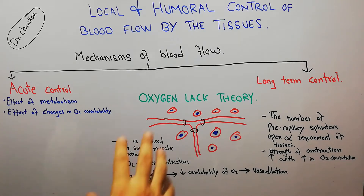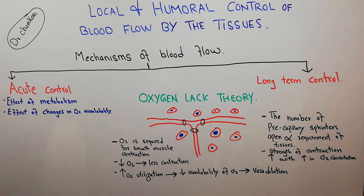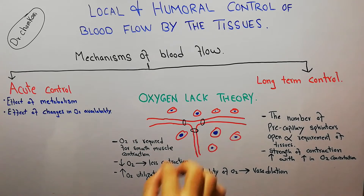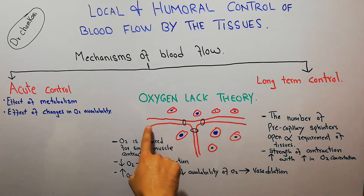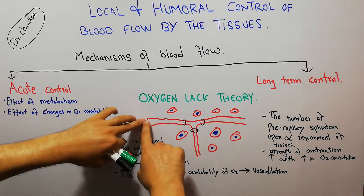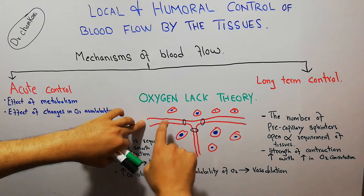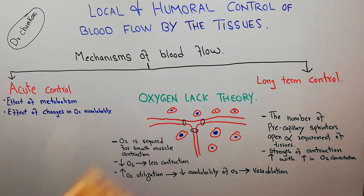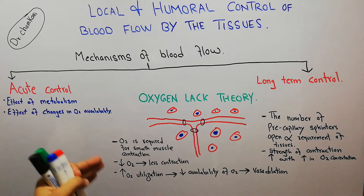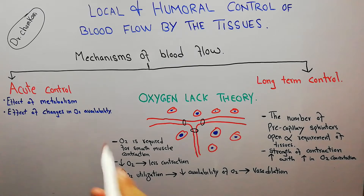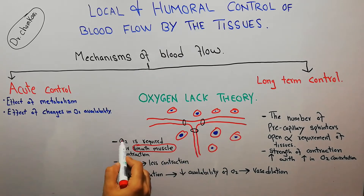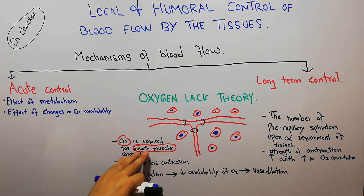According to the oxygen lack theory, oxygen is required for smooth muscle contraction. The blood vessels — arterioles, meta-arterioles, and capillaries — are all made of smooth muscle, and these smooth muscles require oxygen for contraction.